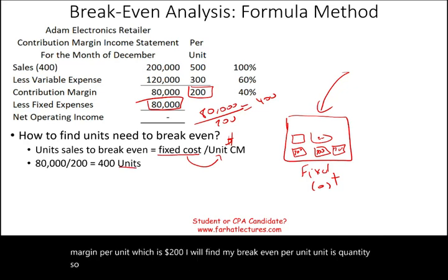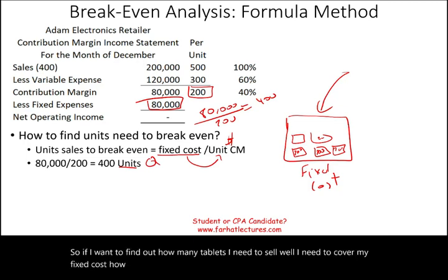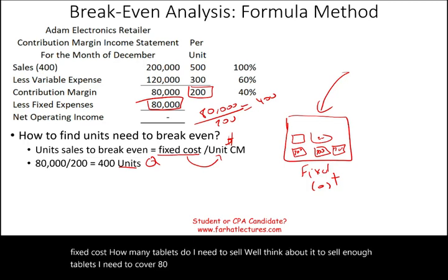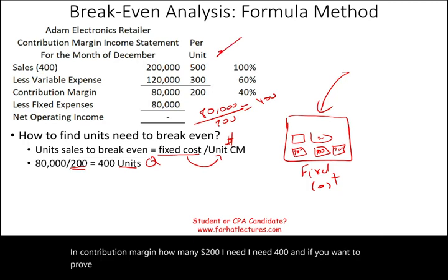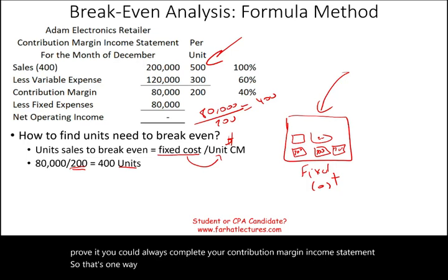If we want to find how many tablets we need to sell, we need to cover $80,000. Each tablet gives us $200 in contribution margin. How many $200s do we need? 400. You can always verify this by completing the full contribution margin income statement. That's how to find break-even in terms of units — quantity.